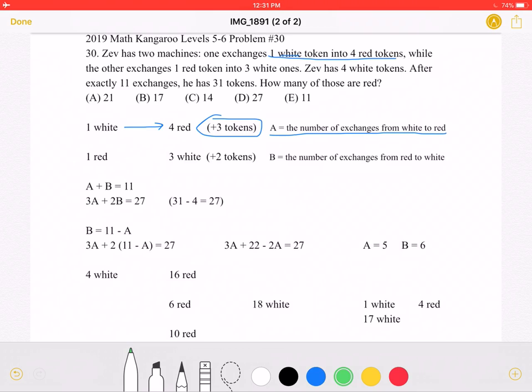Now let's look at the second type of exchange, one red token into three white ones. This will lead to a total of two tokens gained. Let's let B be equal to the number of exchanges from red to white.